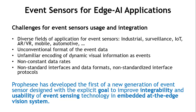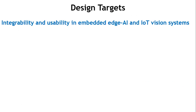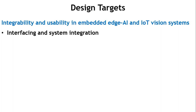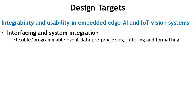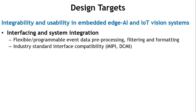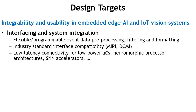Prophesee has tried to address all these points in a new generation of event vision sensors. For integrability and usability at the edge, there are two buckets of problems to solve. The first is system integration: preprocessing on the sensor, storing event data in a format optimal for transmission and processing, and compatibility with industry standards such as MIPI and DCMI interfaces that are widely used in this context.